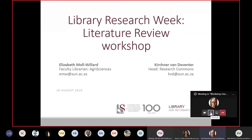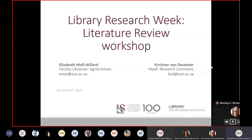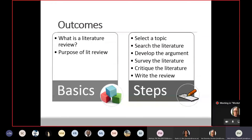It looks like everybody left that other meeting and I ended it, so nobody else should be able to join it. Let's get going. I'm going to go through what we're covering today: first the basics of a literature review — why we do it and what its purpose is — and then how to do a literature review, covering six steps. Sometimes you can simplify some of these steps and there's a lot of linking across them, but we'll cover each individually.